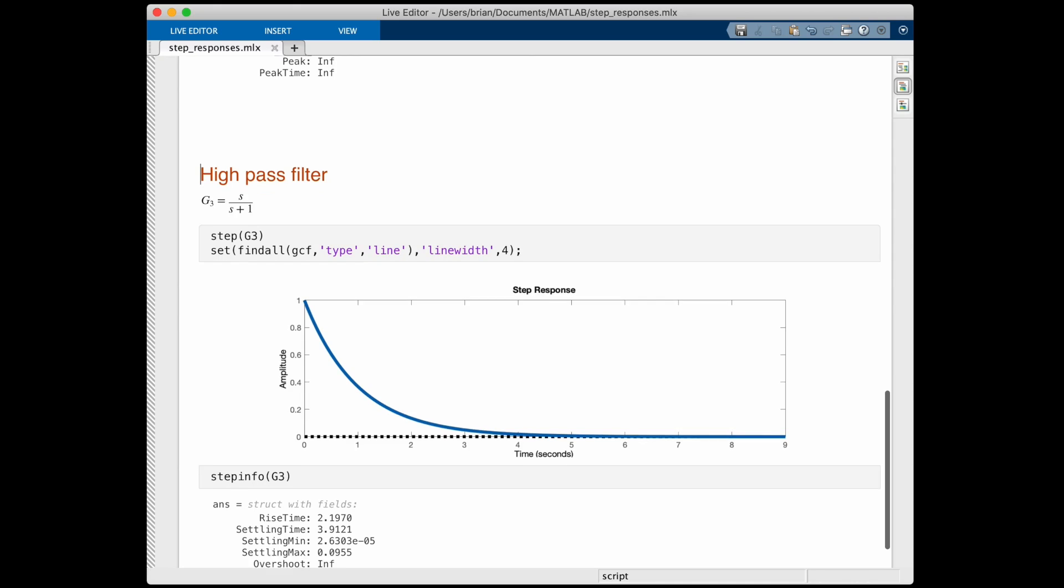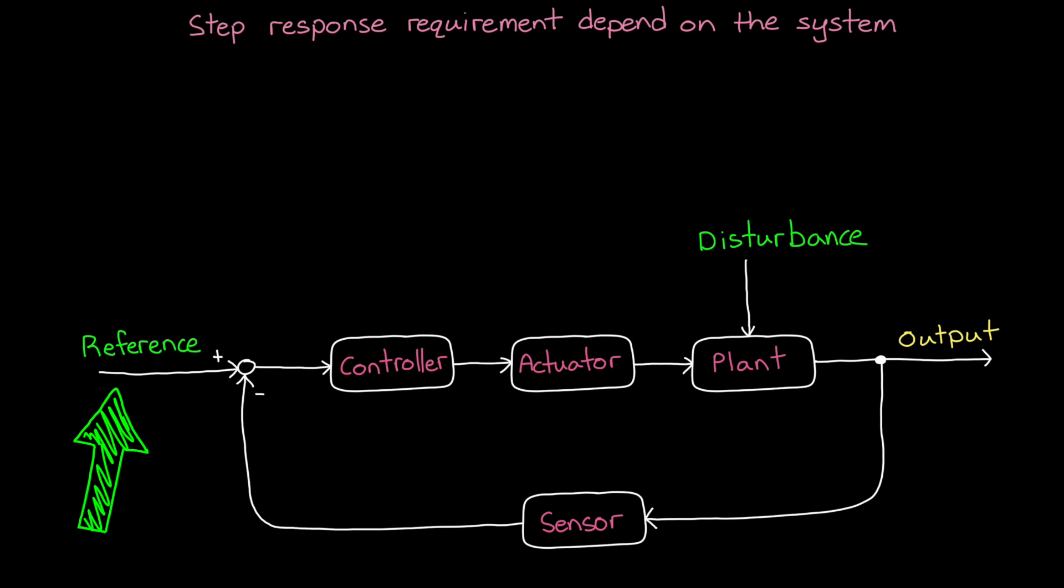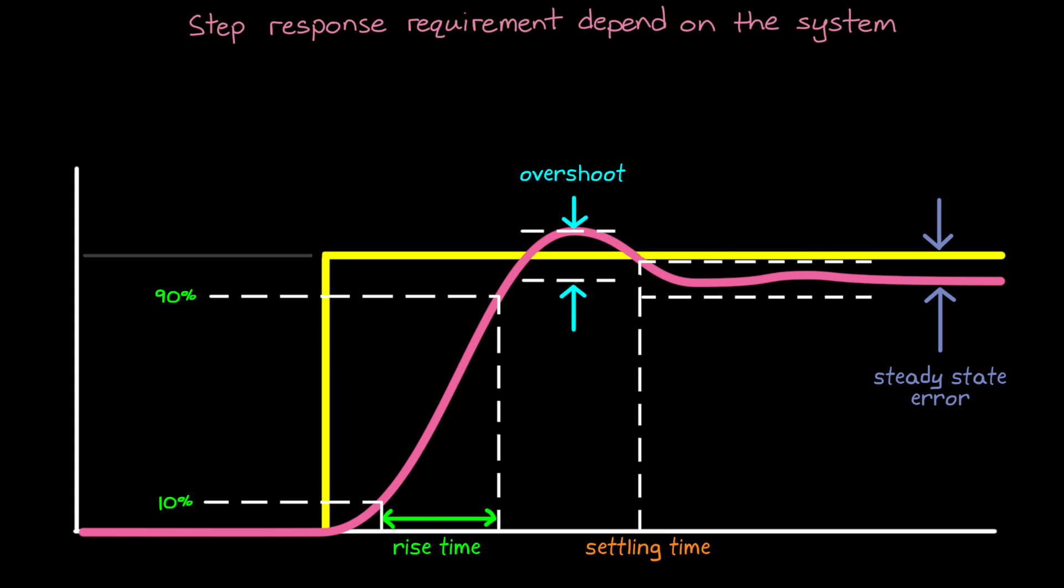Now the high pass filter does return some real values, but we have to interpret them differently. Rise time and settling time represent more like how long it takes to decay and settle. The peak value is still valid and tells us what the maximum value is, which happens to come right at the beginning of the response. But overshoot isn't really a thing since the final value is zero and so any non-zero value will always have a percentage that is infinitely high. So, as we've already covered, not all step response requirements make sense for every type of system. But if we're designing a reference tracking system that's functionally going to behave like a low pass filter, then these classic requirements are just perfect.